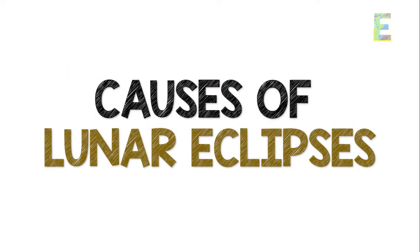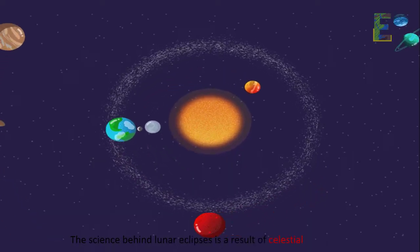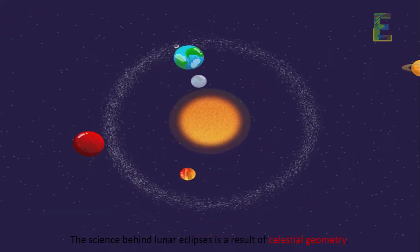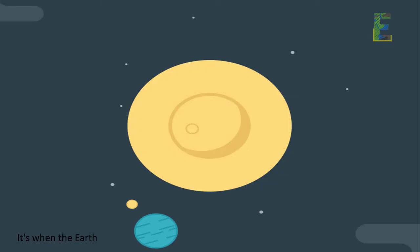Causes of Lunar Eclipses. The science behind Lunar Eclipses is a result of celestial geometry. It's when the Earth, Moon, and Sun align in a straight line, creating a shadow casting event.